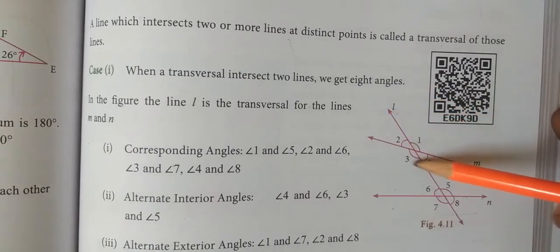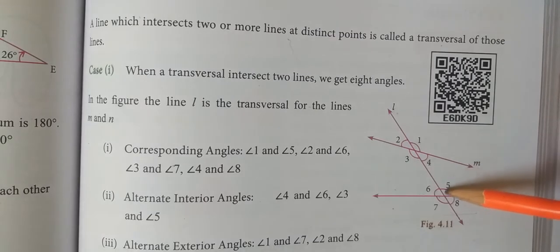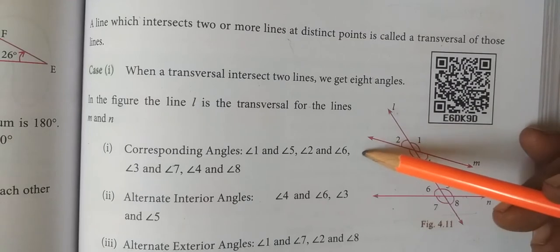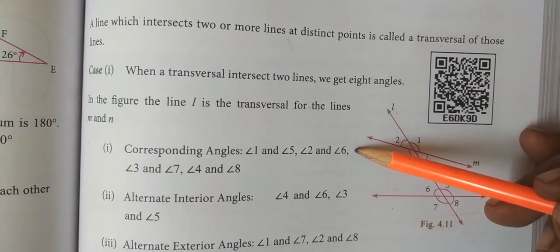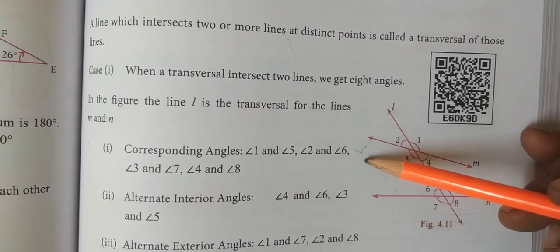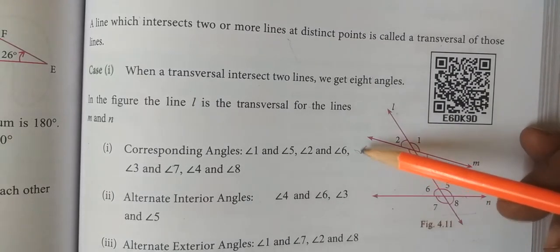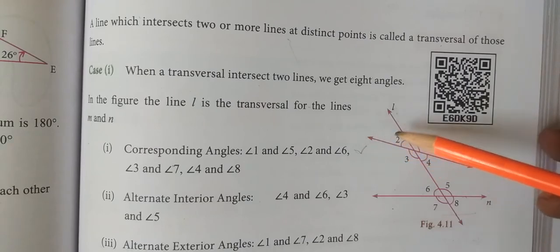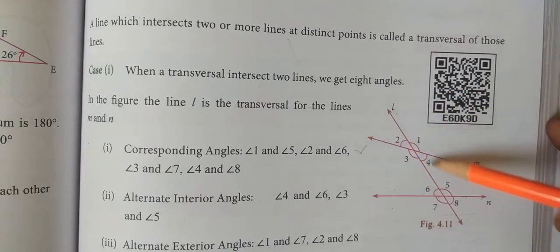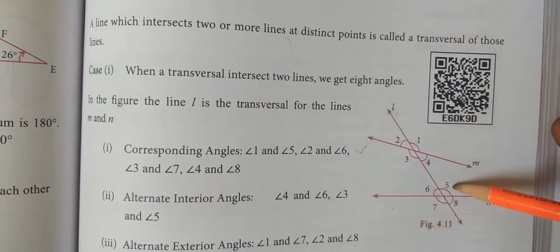So we count the eight angles: one, two, three, four, five, six, seven, eight. Among these eight angles, we will learn the names. In this video we will look at the first one: corresponding angles. What are corresponding angles? One and five are corresponding angles.